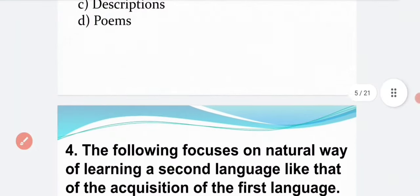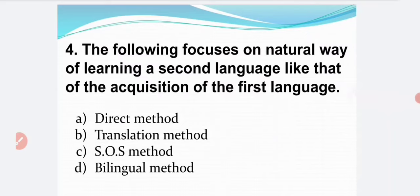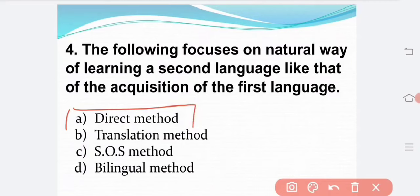The following focuses on the natural way of learning a second language, like the acquisition of the first language. Option A — direct method. Option B — grammar translation method. Option C — SOS method. Option D — bilingual method. The correct answer is Option A: direct method.